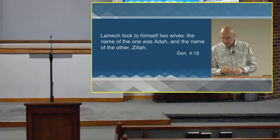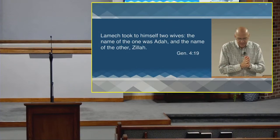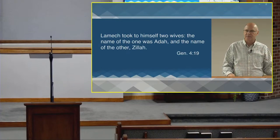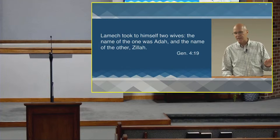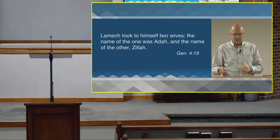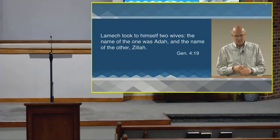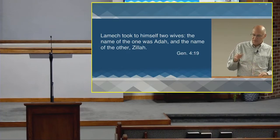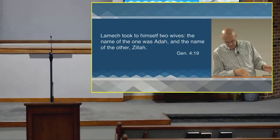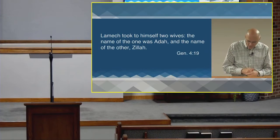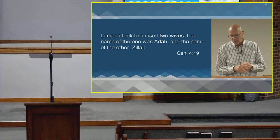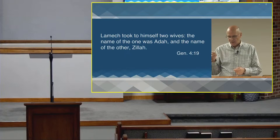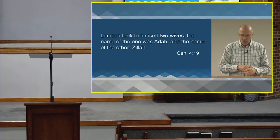Let's look at Lamech. Verse 19: Lamech is the first recorded one to begin polygamy. Up until this time, there is no polygamy. And polygamy is a direct disobedience of God's law regarding marriage. The names of his wives mean 'ornament' and 'shadow,' suggesting their beauty and his attraction. 'Lamech took to himself two wives. The name of one was Adah, and the name of the other, Zillah.'